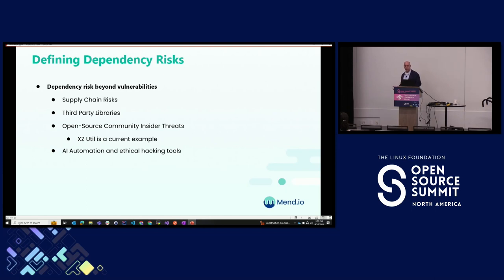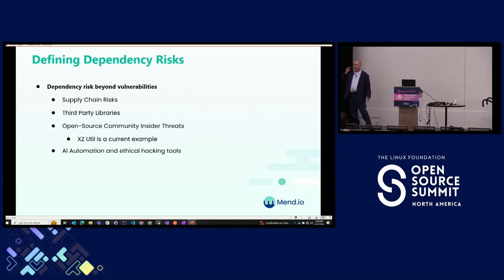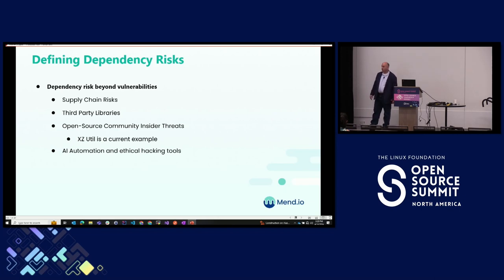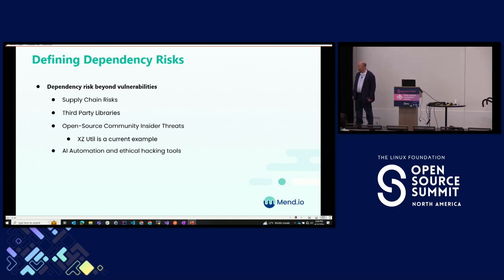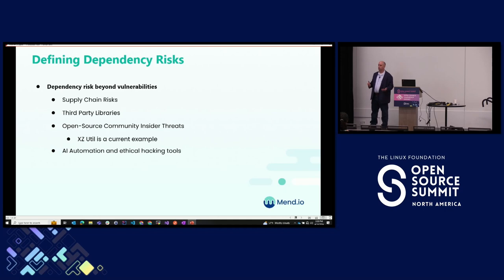Dependency risk also goes beyond the obvious. Think about your supply chain risks and your third-party libraries — think about your tertiary dependencies: a dependency of a dependency of a dependency. That's absolutely crucial and should not be overlooked. Log4Shell and Spring4Shell are just two examples. Think about insider threats — XZ Utils is the current example. It's great that we caught it, and the crazy part was it was a Microsoft engineer who caught it, which is hats off to him. The fact that he saw something strange and dug into it was amazing.